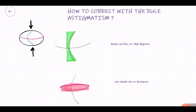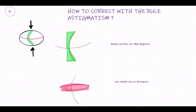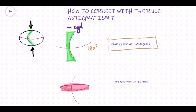There are two ways to correct with-the-rule astigmatism using cylindrical lenses. The first method: since the vertical meridian is more convex, we decrease its power by giving a minus cylinder. The minus cylinder has a concave surface, so we give this concave cylinder along the vertical meridian. The axis of this concave cylinder is perpendicular, so it will be at 180 degrees. Therefore the first way of correcting with-the-rule astigmatism is by giving a minus cylinder at 180 degrees.